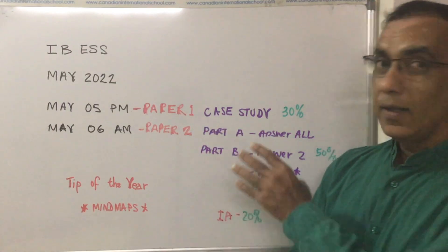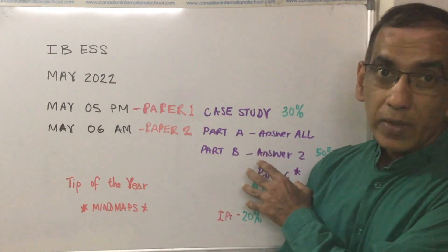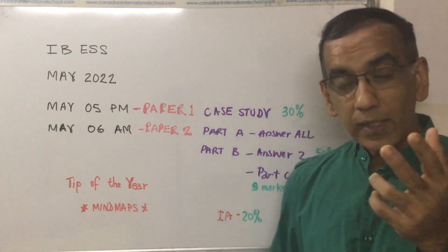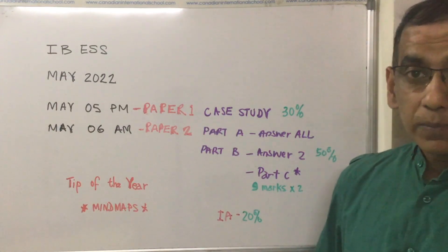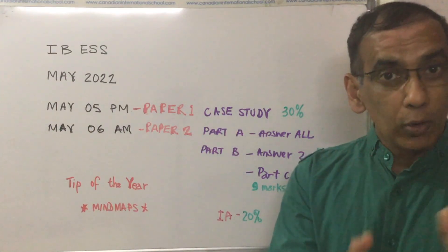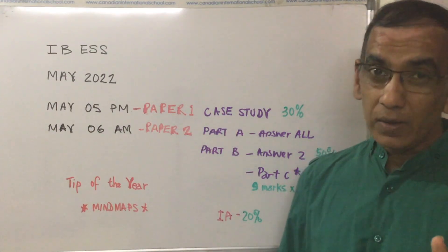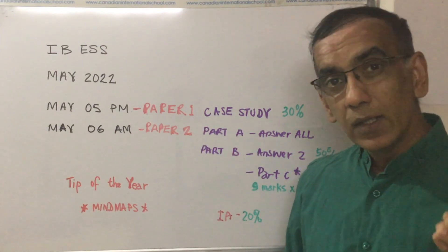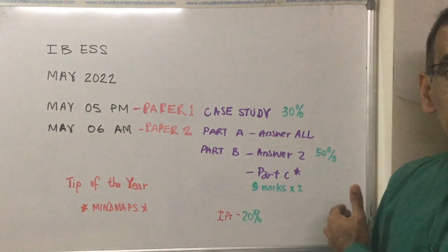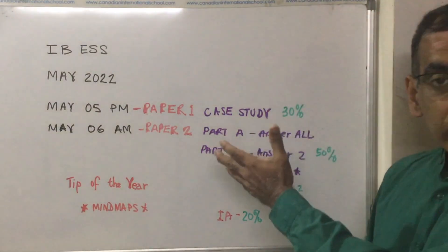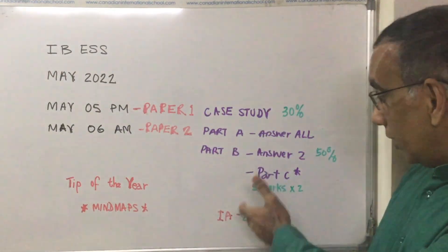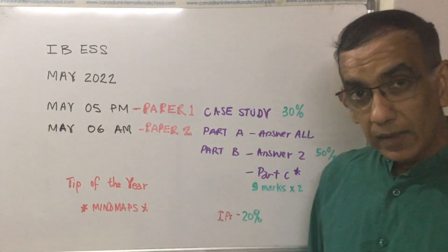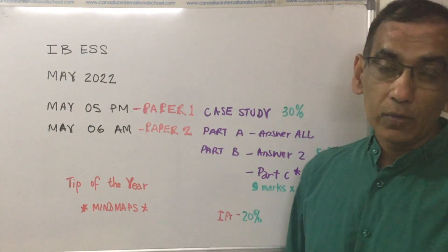Then after a night of rest you'll return in the morning to take the all-important paper 2. Paper 2 carries 50% of your total score in environmental systems and societies, with the other 20% coming from your IA which is already completed.